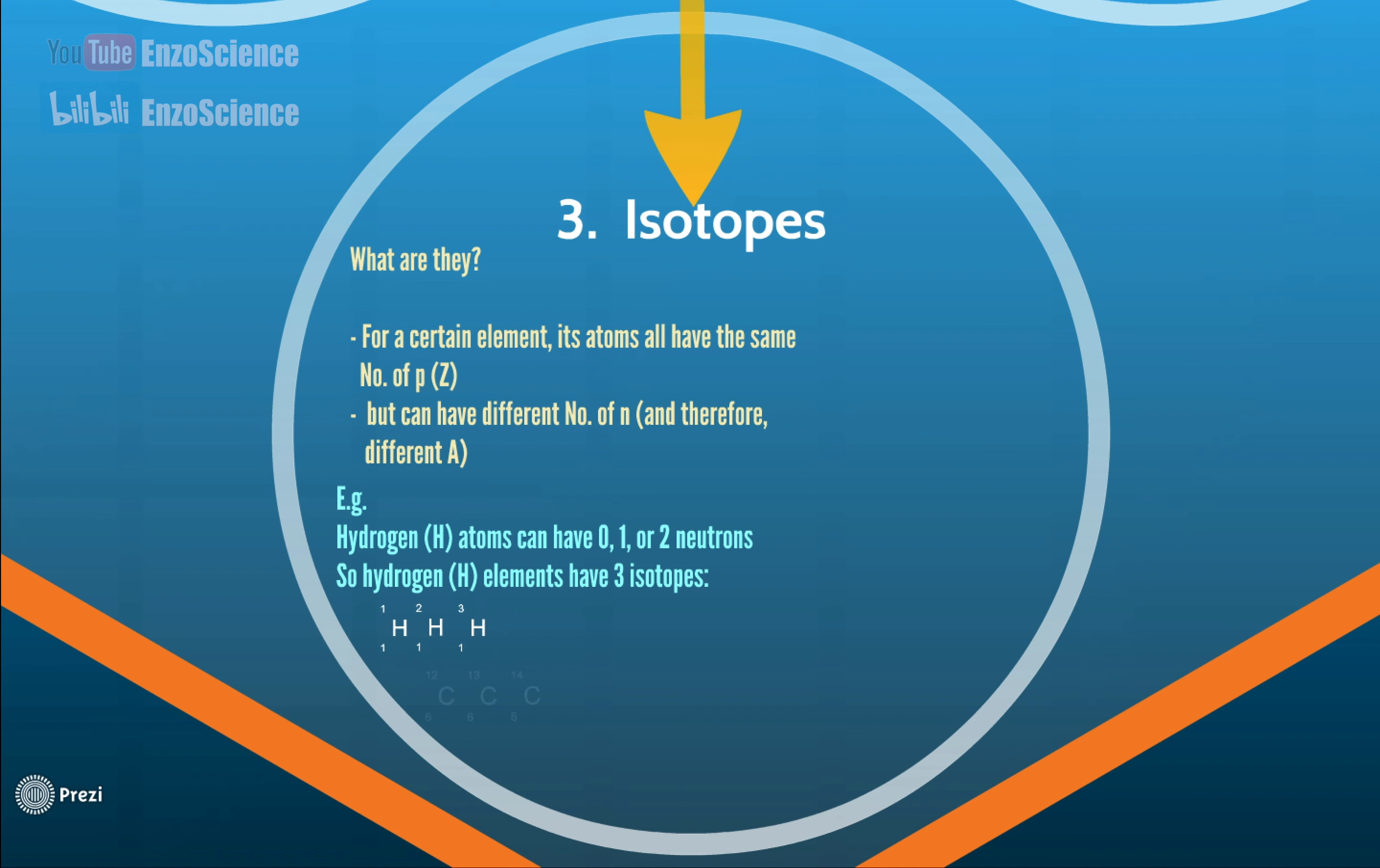Another example is carbon atoms. They all have 6 protons, but may have 6, 7, or 8 neutrons. Well, is there any connection among isotopes? Let's take a look at their properties.